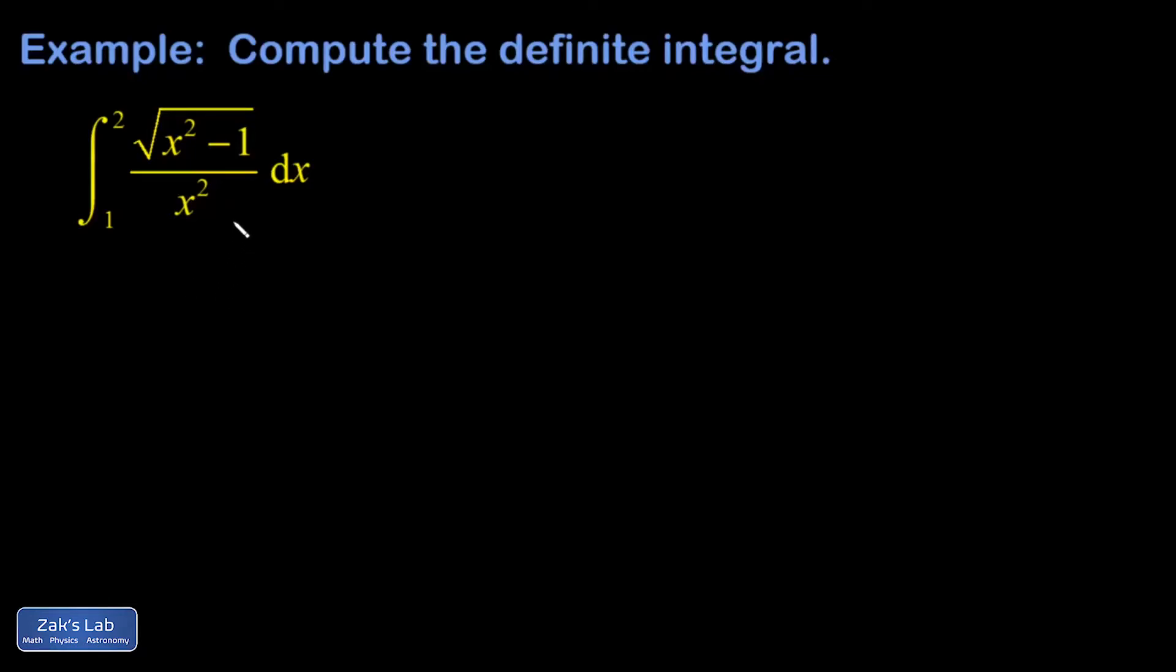Let's check out this trig sub integral. I know it's going to be a trig substitution because I see this messy thing inside of the square root that I would like to express as the square of a single thing, and this fits the form of a trig identity. So I'm always choosing between these two trig identities. Some manipulation of that one or some manipulation of this one.